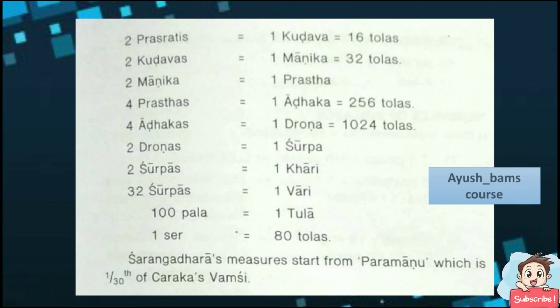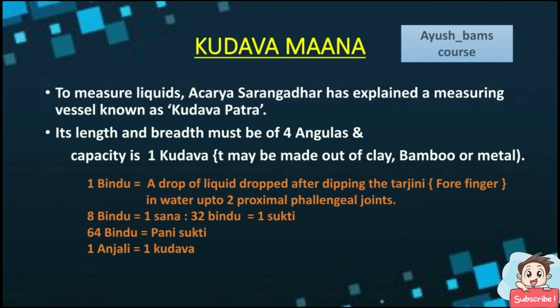Sharangadhara's measure starts from Parmanu, which is 1/30th of Charaka's Vamshi. Kudava Mana: to measure liquids, Acharya Sharangadhara has explained a measuring vessel known as Kudava Patra. Its length and breadth must be 4 Angulas and capacity is 1 Kudava. It may be made up of clay, bamboo or metal. 1 Bindu is equal to a drop of liquid dropped after dipping the Tarjini in water up to 2 proximal phalangeal joints.